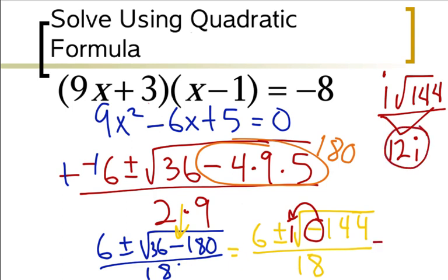This problem just turned into 6 plus or minus 12i over 18. Now this would be the right answer but I do have a Cool Ranch Dorito problem. I need to divide the 6, the 12, and the 18 by the greatest common factor which is 6.